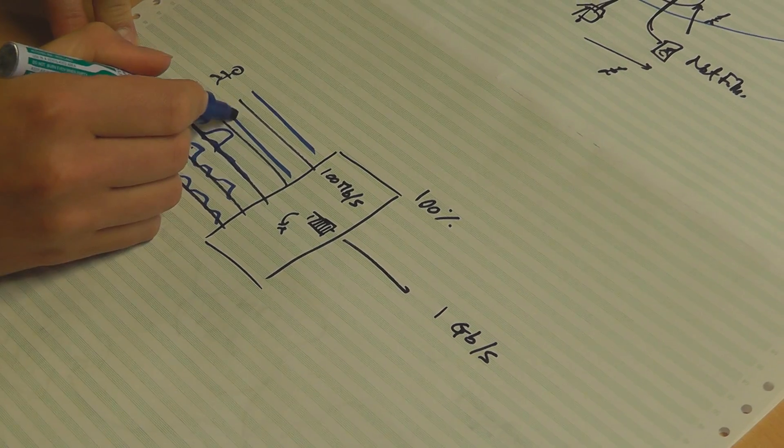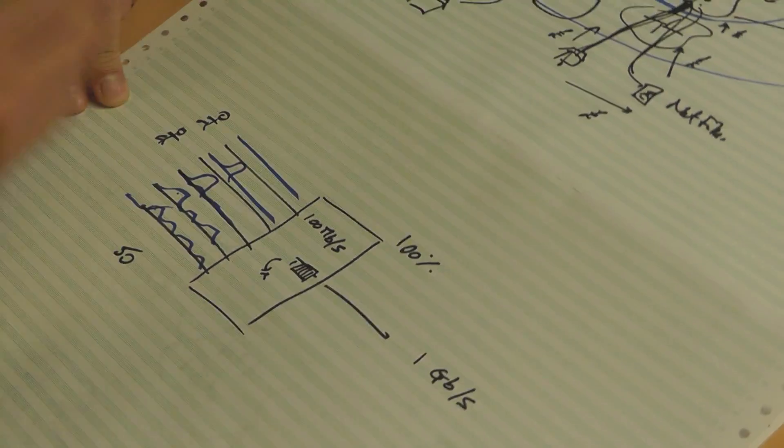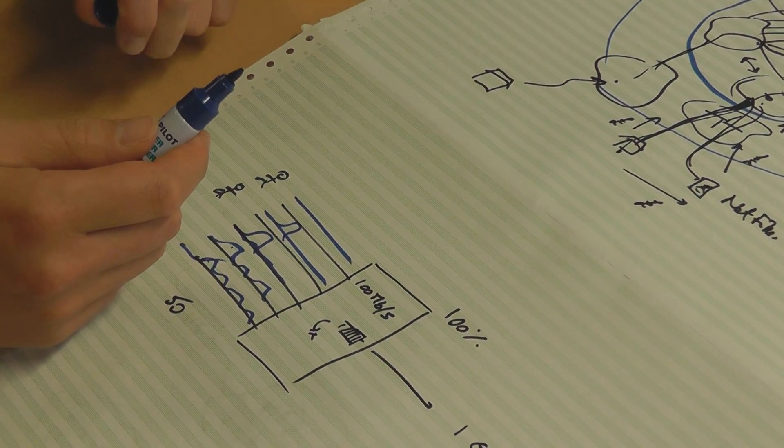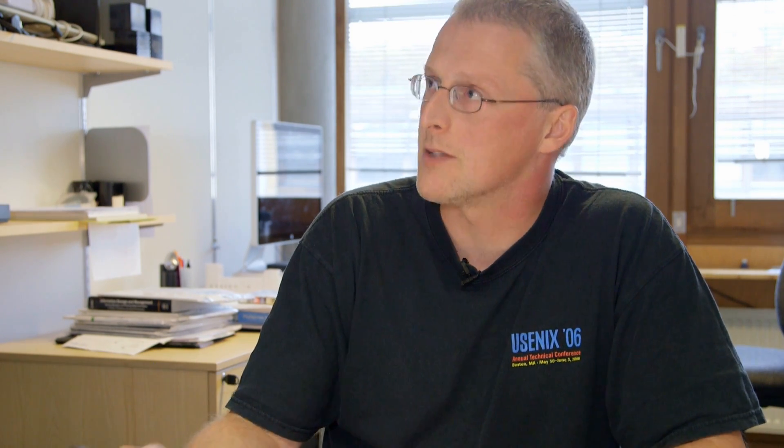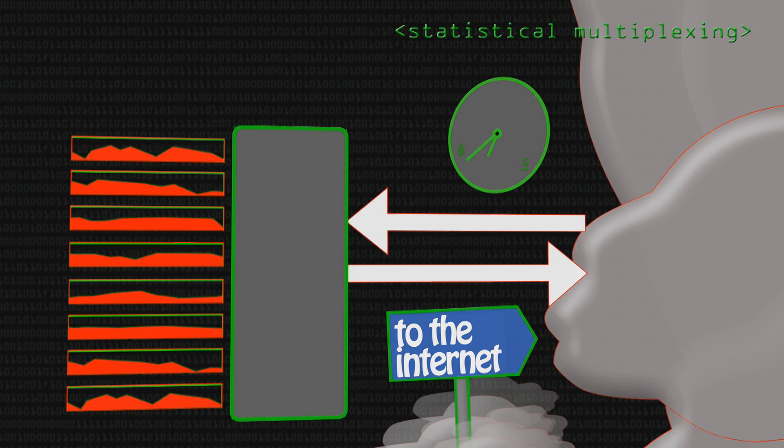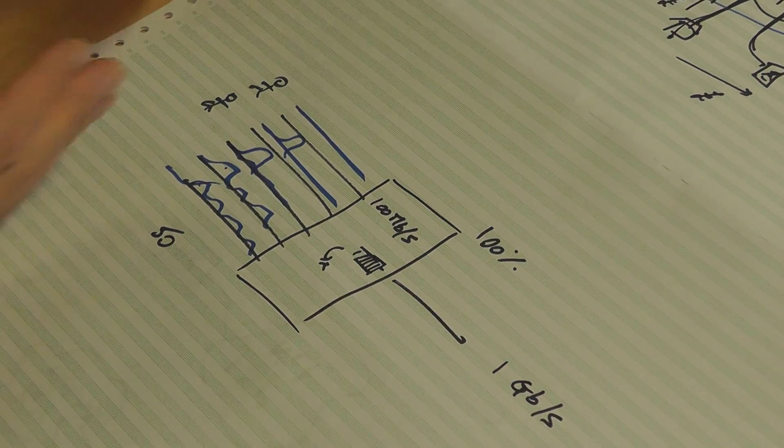If you end up in a situation where everybody does happen to use it significantly all at the same time — for instance, they're watching a live stream — or, as I experience with my ISP, if I come home in the evening sometime between about five o'clock and eight o'clock, things are often a bit slower, the network's not so good. And that's not because my level of access has changed; it's because everybody's using it at that time, so it's just busy.